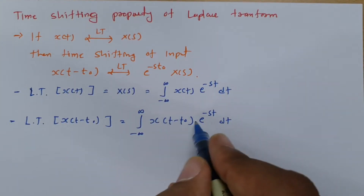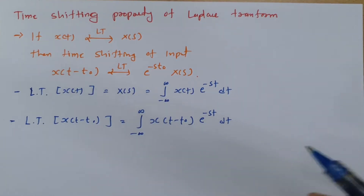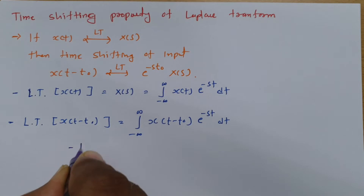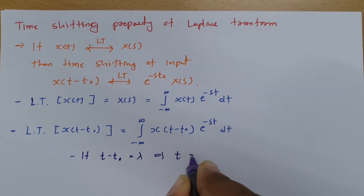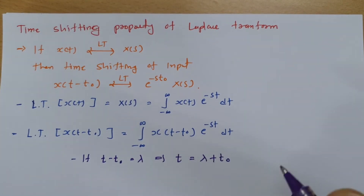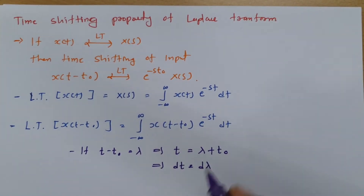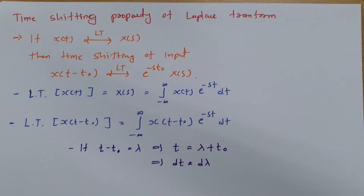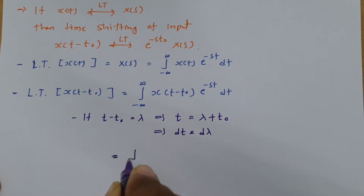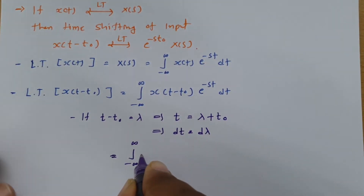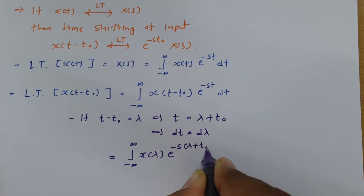To express this in terms of X(s), I will substitute t minus t0 equals lambda. So t equals lambda plus t0. Taking differentiation, dt equals d*lambda, and the limits do not change — they remain minus infinite to infinite. The integral becomes the integral from minus infinite to infinite of x(lambda) times e to the power minus s times (lambda plus t0) d*lambda.